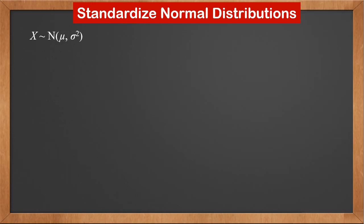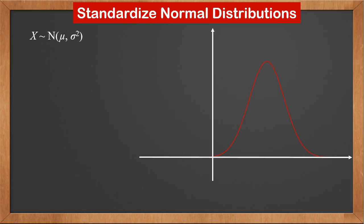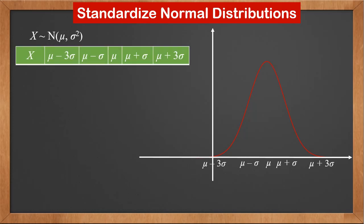Now let's see how to transform any normal distribution to the standard normal distribution. Let's put any normal distribution in the graph and look at 5 points: mu, mu minus sigma, mu plus sigma, mu minus 3 sigma, and mu plus 3 sigma.